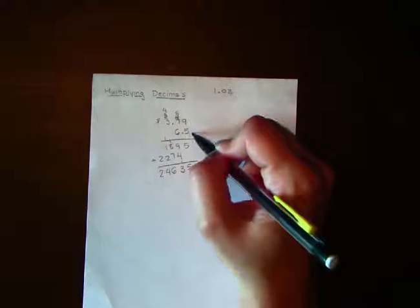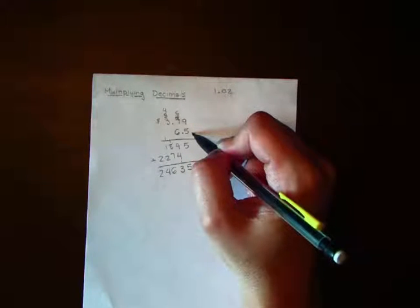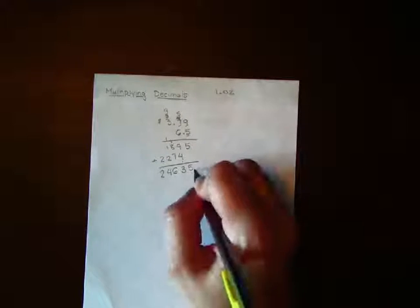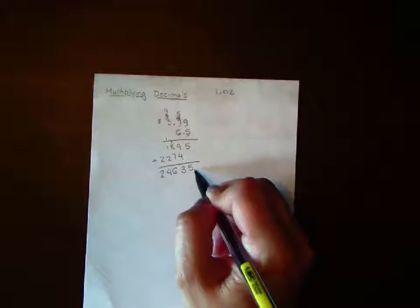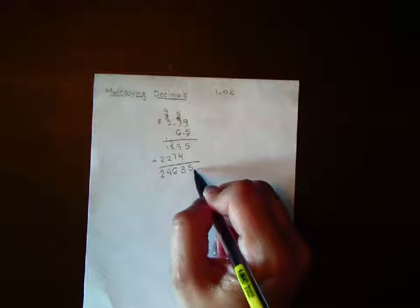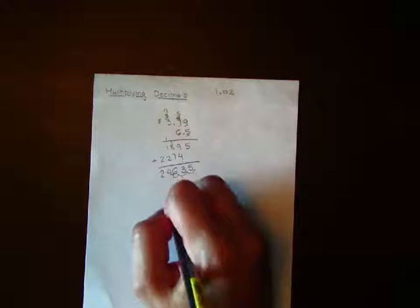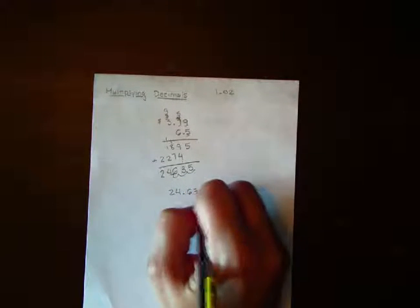So here's my answer. Now I need to go back up to my original problem and count up how many decimal place positions were there. So here's 1, 2, 3. Currently your decimal point is right here. So we're going to move it to the left 3 spots: 1, 2, 3. So your answer would be 24.635.